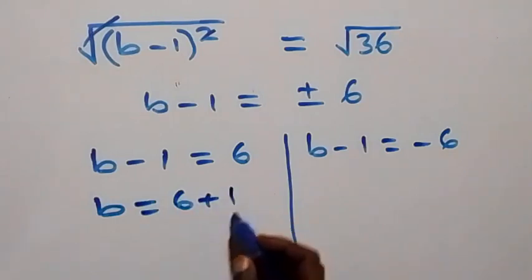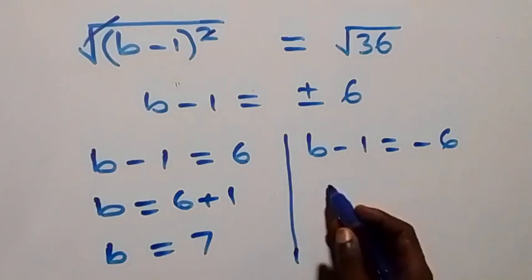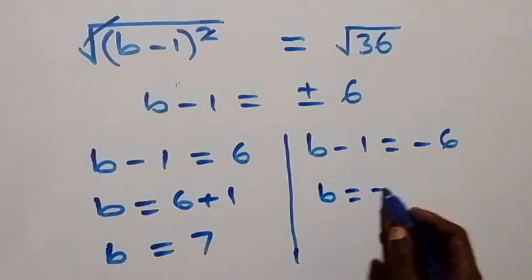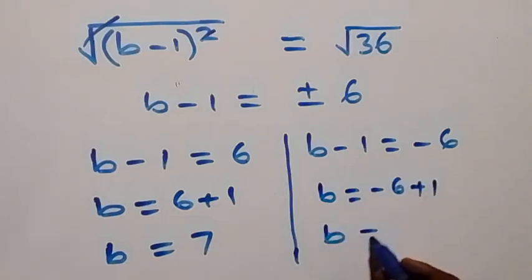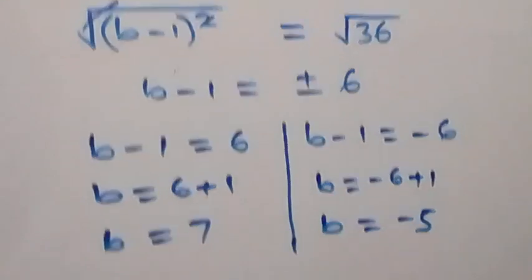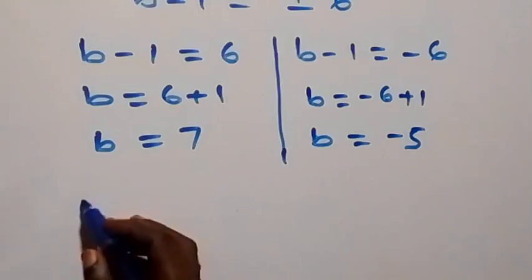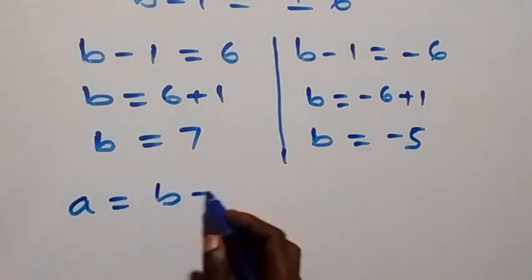So either b minus 1 equals 6, giving b equals 7, or b minus 1 equals minus 6, giving b equals minus 6 plus 1, that is b equals minus 5.